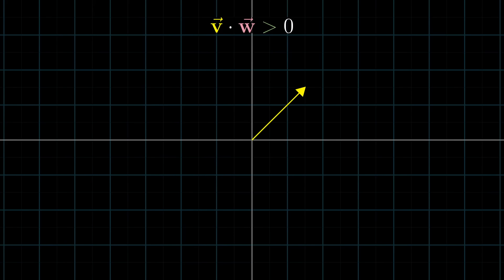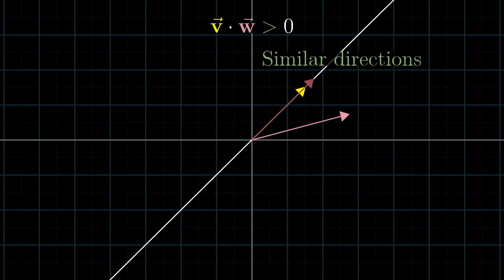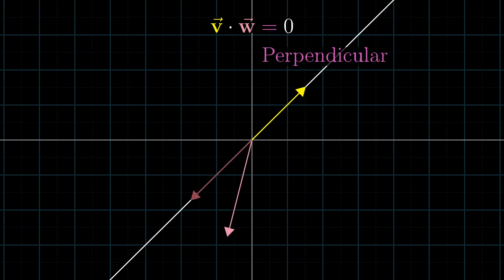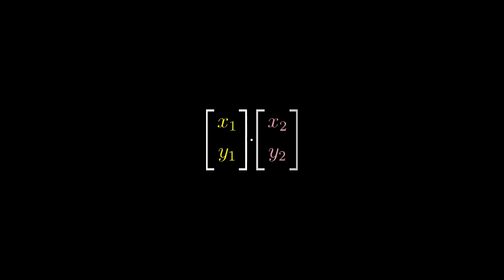So to sum up, on the surface, the dot product is a very useful geometric tool for understanding projections, and for testing whether or not vectors tend to point in the same direction. And that's probably the most important thing for you to remember about the dot product. But at a deeper level, dotting two vectors together is a way to translate one of them into the world of transformations. Again, numerically, this might feel like a silly point to emphasize.